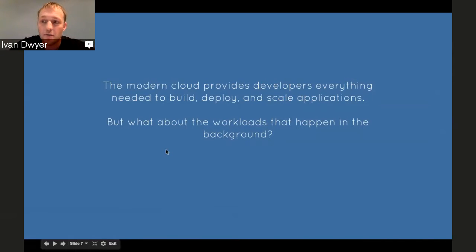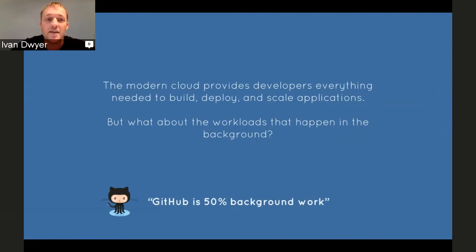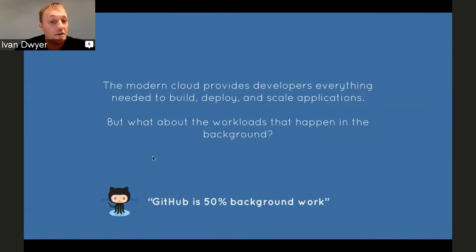Just for a point of reference, GitHub once said that they were 50% background work — meaning that everything that happens on GitHub, half of it is happening behind the scenes or away from the user interface. And so they've done a great job of building out a lot of this asynchronous functionality. That's kind of what we do here at Iron.io and what we want to talk about today.